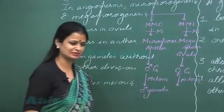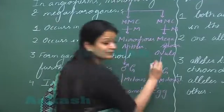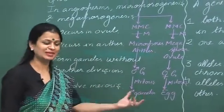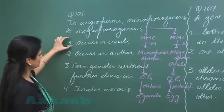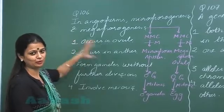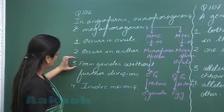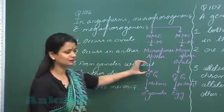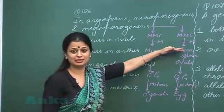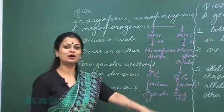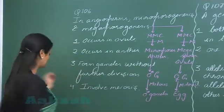Looking at the options now: occurs in ovule? No, one in ovule, one in anther. Forms gametes without further division? No, after meiosis, mitosis occurs to form gametes. Involves meiosis? Yes, this is the right option. The answer is 4.